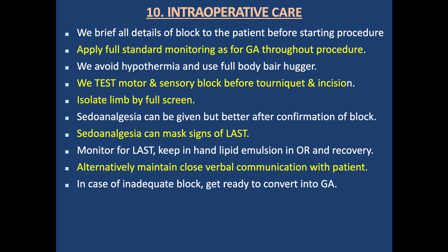Intraoperative care: We brief all details of the block to the patient before starting the procedure. We apply full standard monitoring throughout. We avoid hypothermia and use a full-body bear hugger. We test motor and sensory block before making an incision. We isolate the limb with a full drape. Sedoanalgesia can be given but is better after confirmation of the block, as it can mask signs of local anesthetic systemic toxicity. We monitor for local anesthetic systemic toxicity and keep lipid emulsion at hand in the OR and recovery. We maintain close verbal communication with the patient. In case of inadequate block, we are ready to convert the patient to general anesthesia.